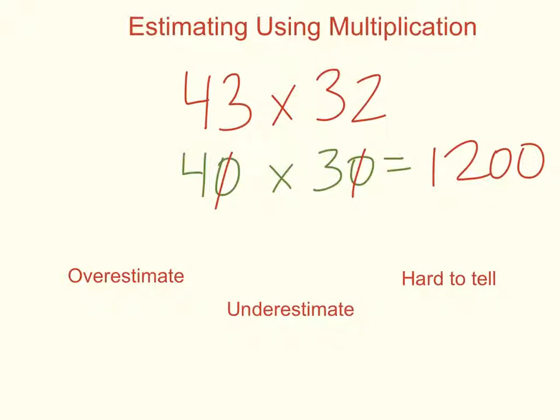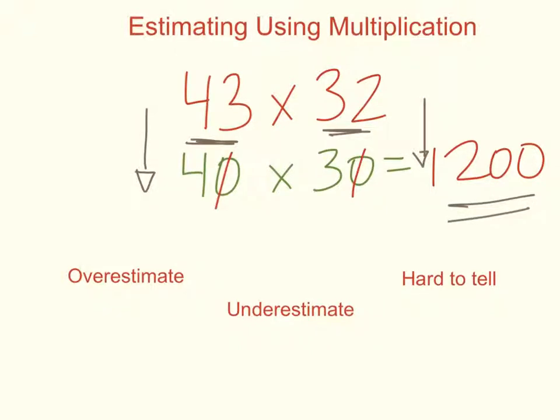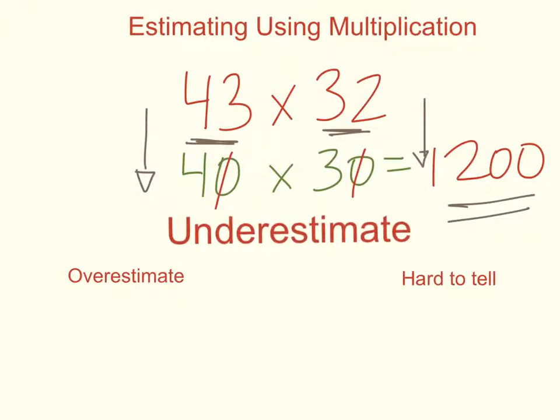I'm going to explain what this might mean. Because I rounded 43 down to 40 and I rounded 32 down to 30, we can say that our estimate here is an underestimate. And the reason it's an underestimate is because we rounded both numbers down.